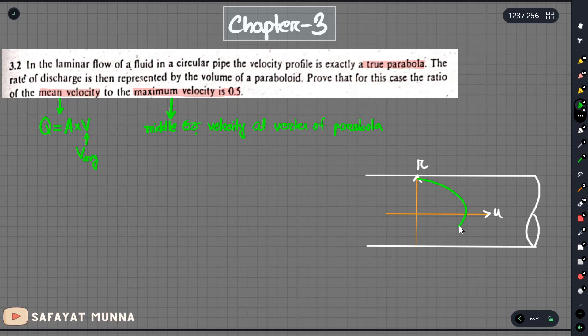Let's identify the velocity profile. The maximum velocity occurs at the middle value, at the center of the pipe.